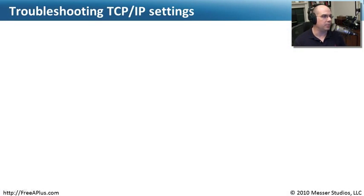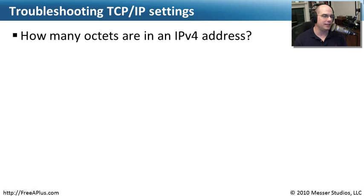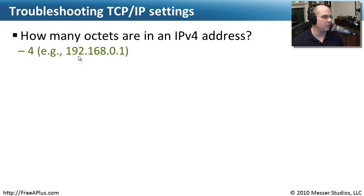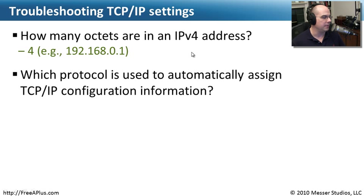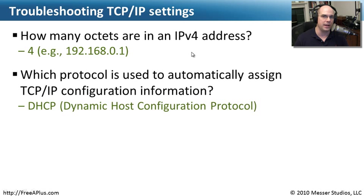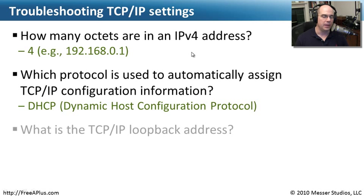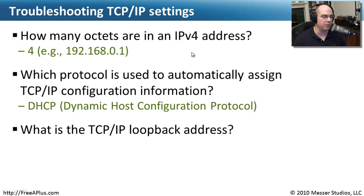Let's review some things from our Troubleshooting TCP/IP Settings module. How many octets are in an IPv4 address? There are four bytes, also referred to as octets — for example, 192.168.0.1 has four octets separated by periods. Which protocol is used to automatically assign TCP/IP configuration information? We have a DHCP server — Dynamic Host Configuration Protocol — so we don't have to manually enter IP addressing, subnet masking, or gateways. And what is the TCP/IP loopback address? It's 127.0.0.1, a handy address for testing your own machine.